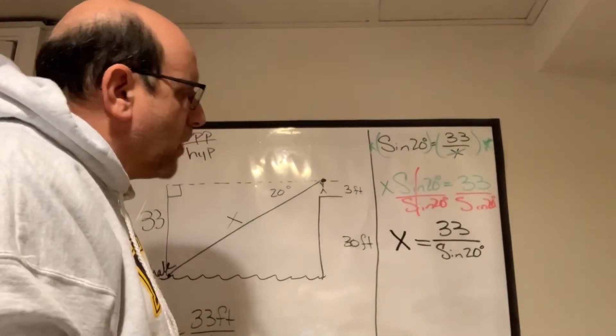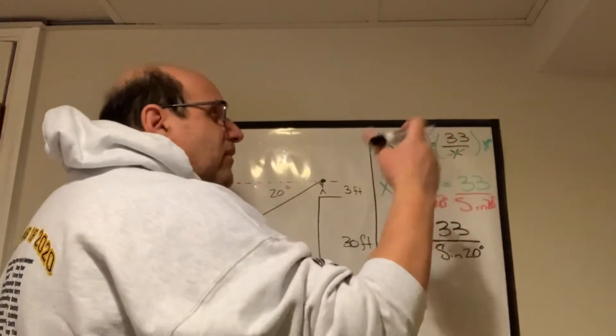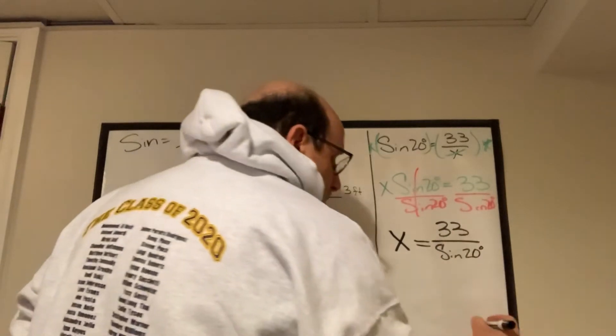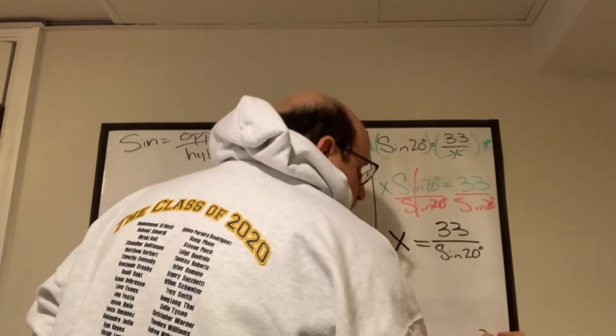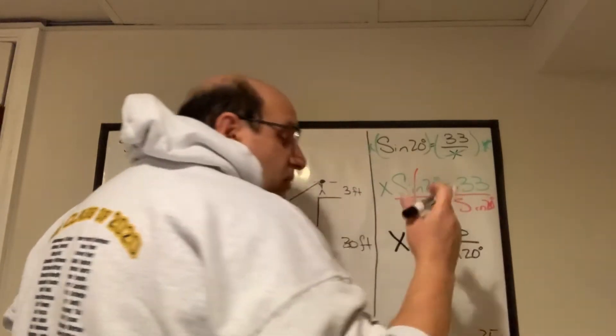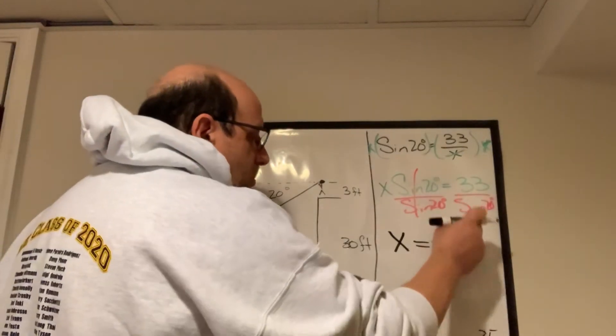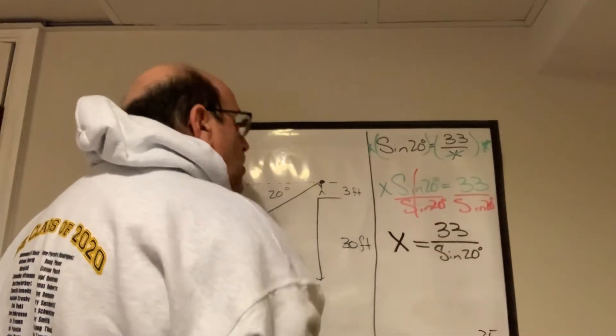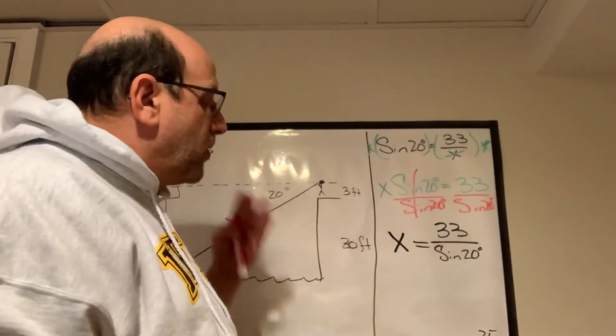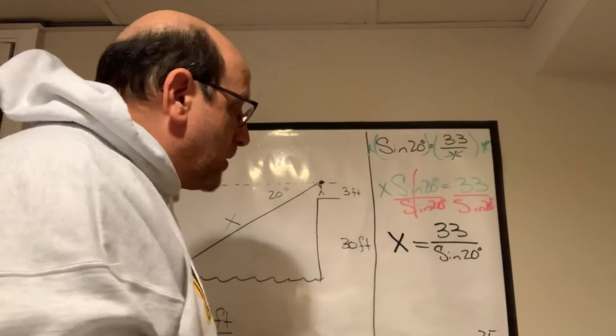But anyway, all you have to do is take that sine of 20, figure it out, write it in the corner. It's going to be 0.33 something, I don't know, 0.35, I'm not so sure. It's probably something bigger than that. But say it's 0.35, then it would be 33 divided by 0.35, which would make it a much bigger number, which means you're basically multiplying by 3 and change.